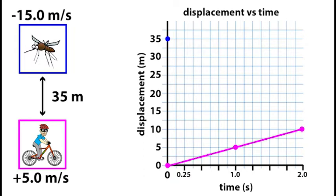What about the mosquito? The mosquito has a negative velocity, that means he moves down 15 meters in the first second and down another 15 meters in the second second.